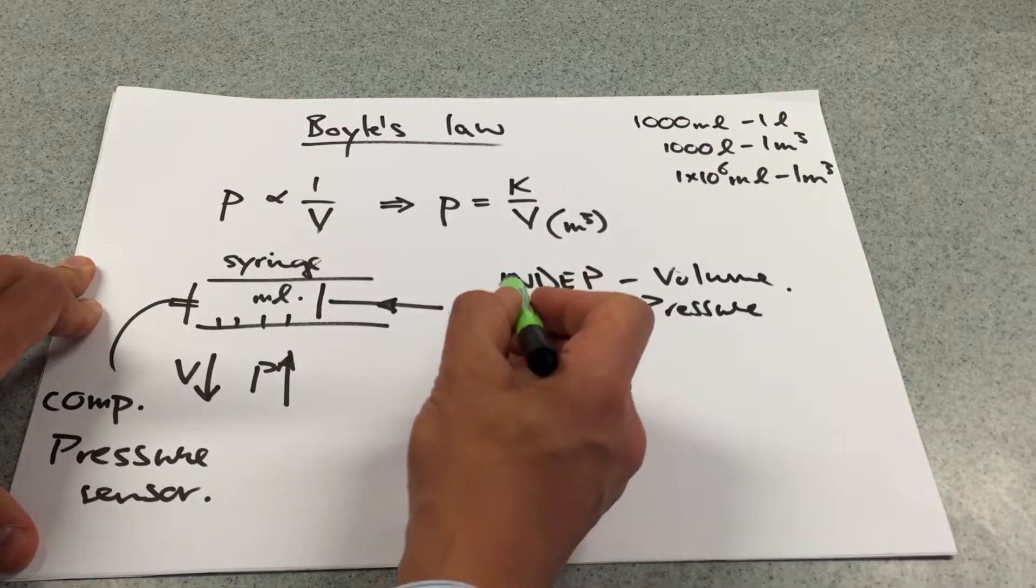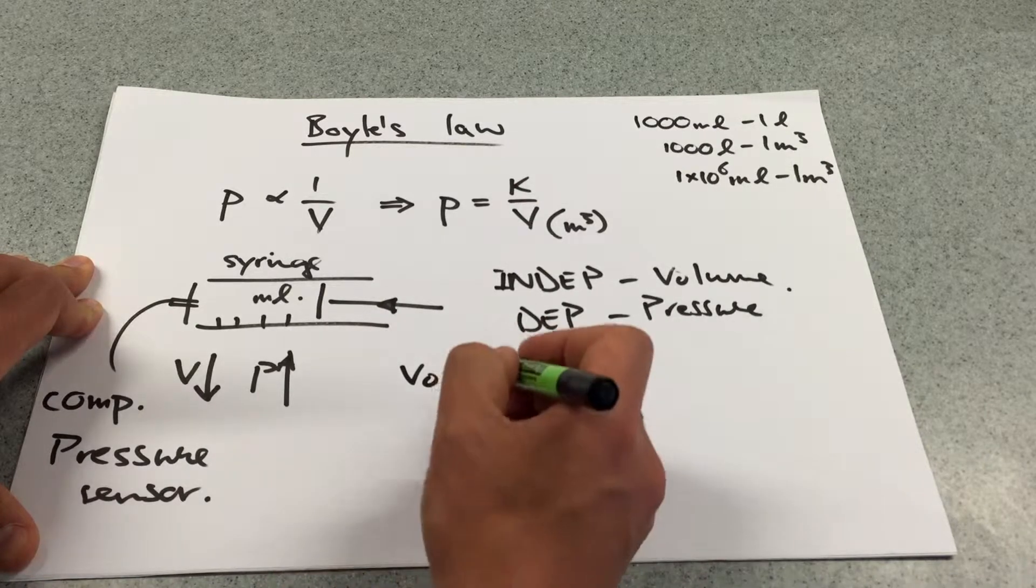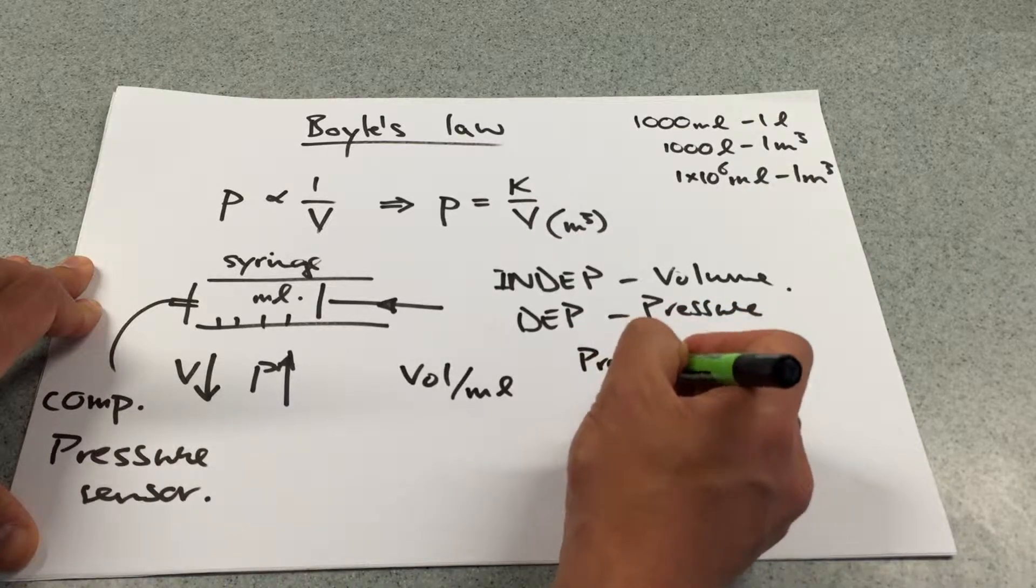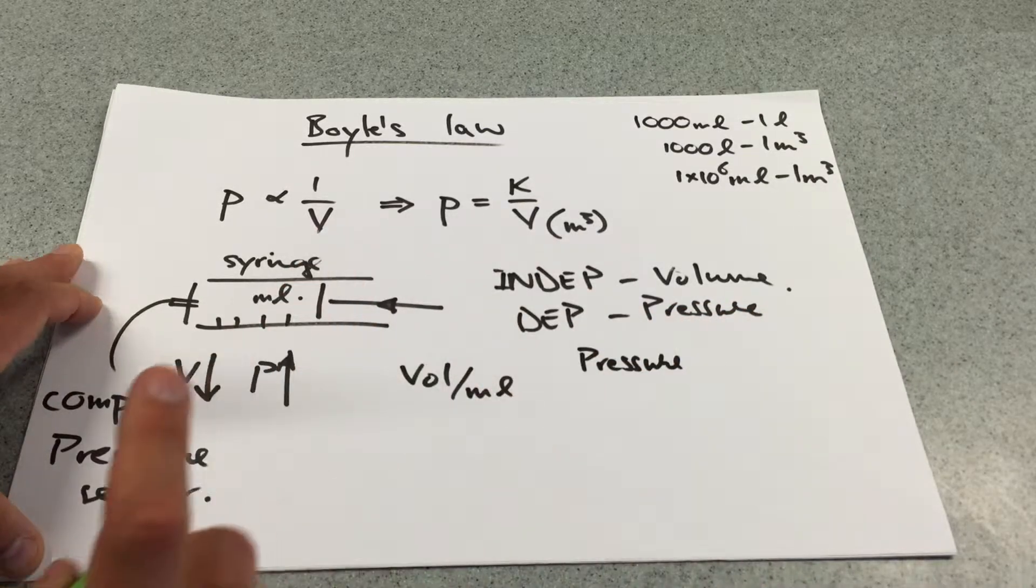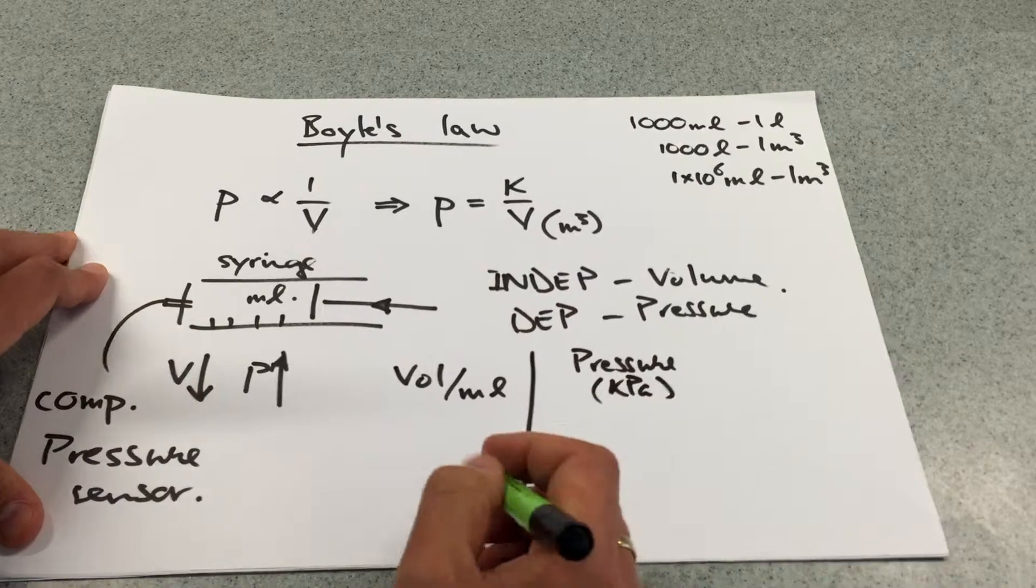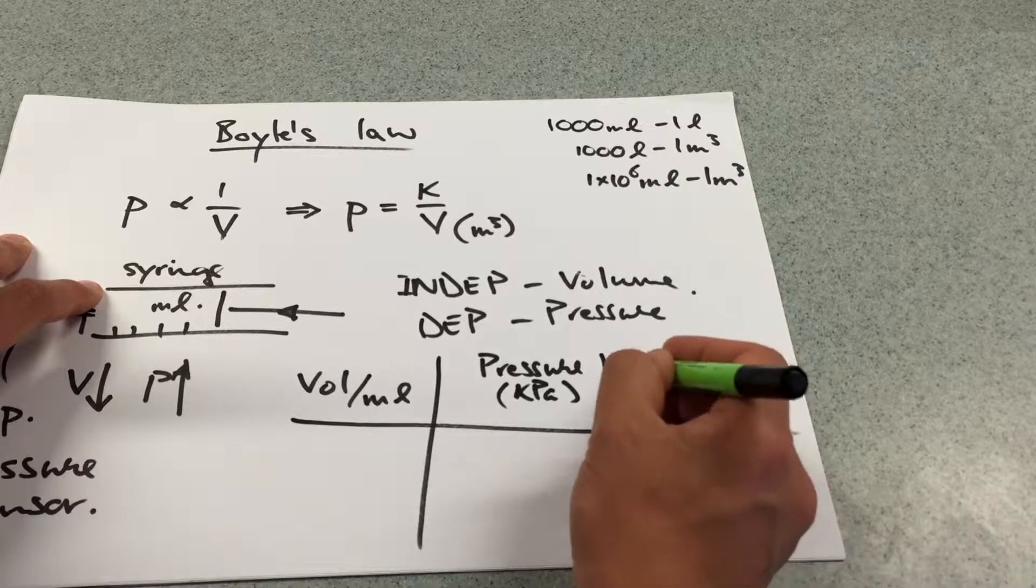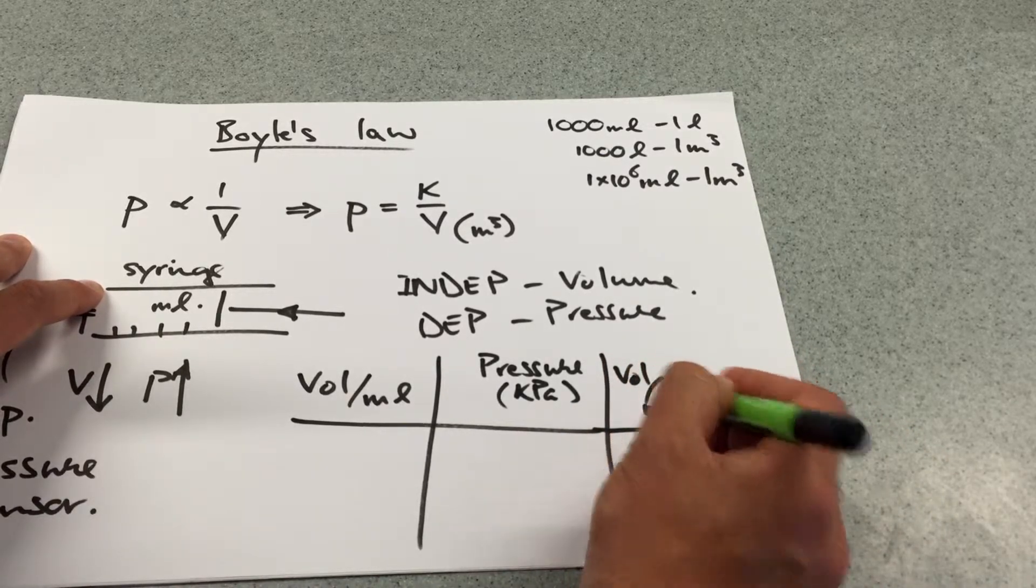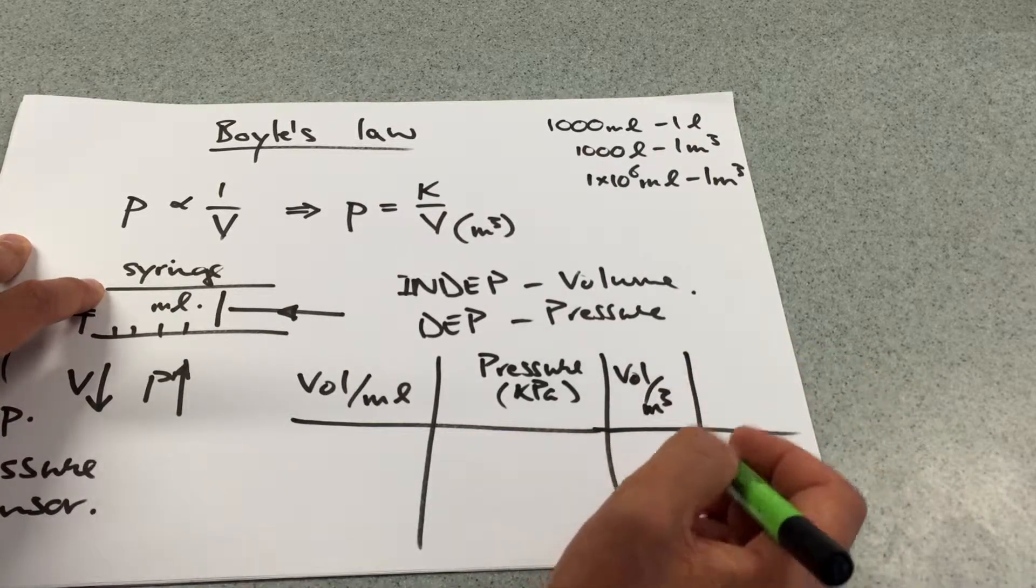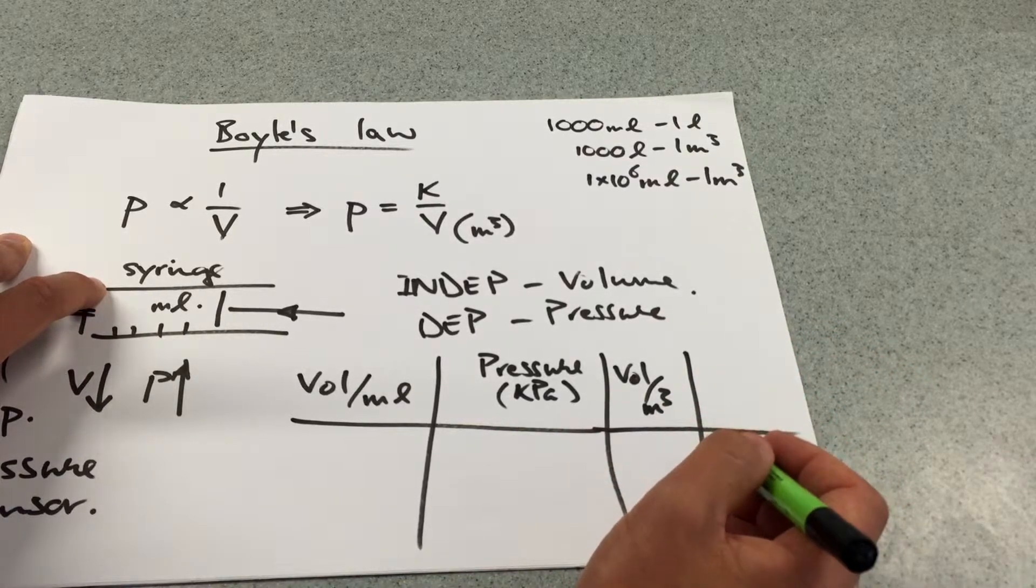So my table of results is going to look, remember we always start with independent on the left, so I'm going to write volume in millilitres and then I'm going to write the pressure in, and interestingly here the computer will give this in kilopascals, and then I'm going to want to leave a few more extra columns. One of these will definitely be the volume in metres cubed. And another one is going to be, well, we'll leave a column at the end to do another bit of calculation, which I'll explain in a minute.